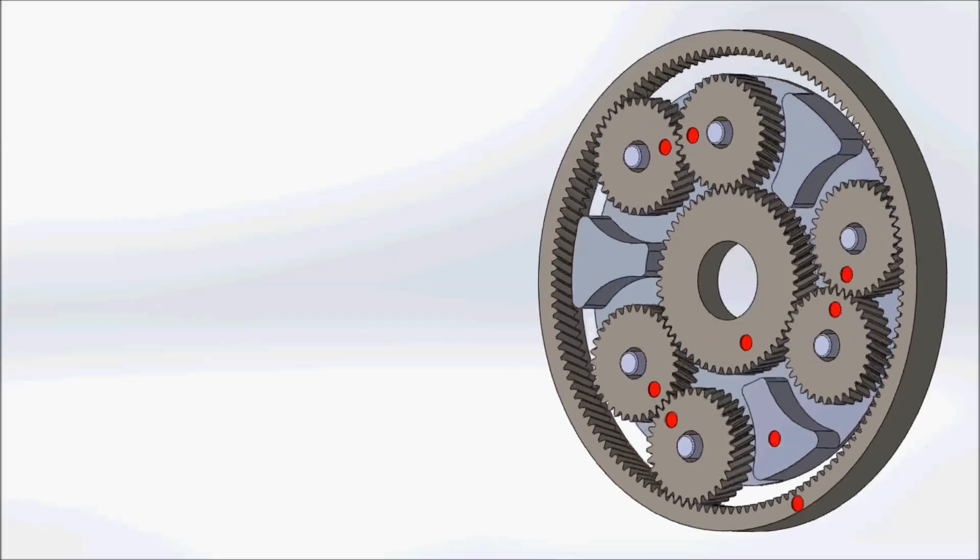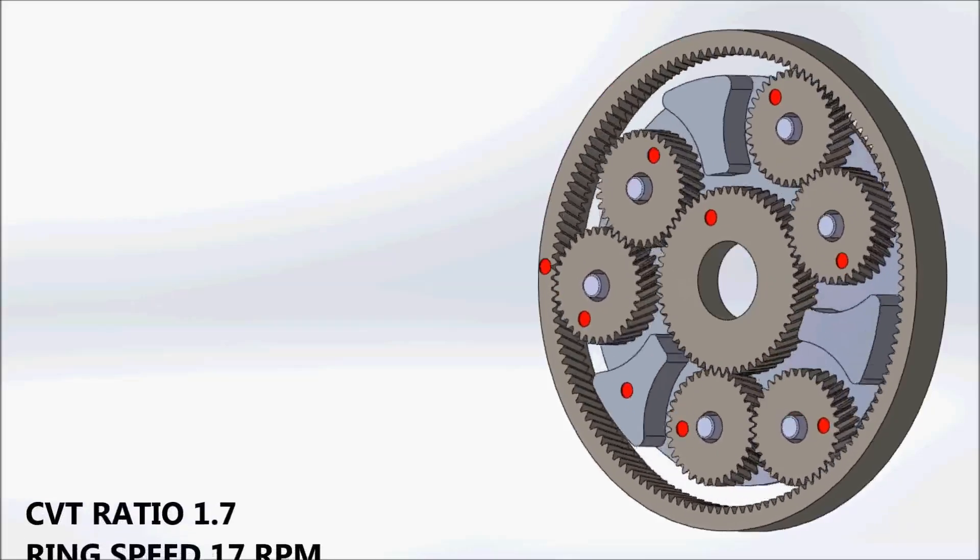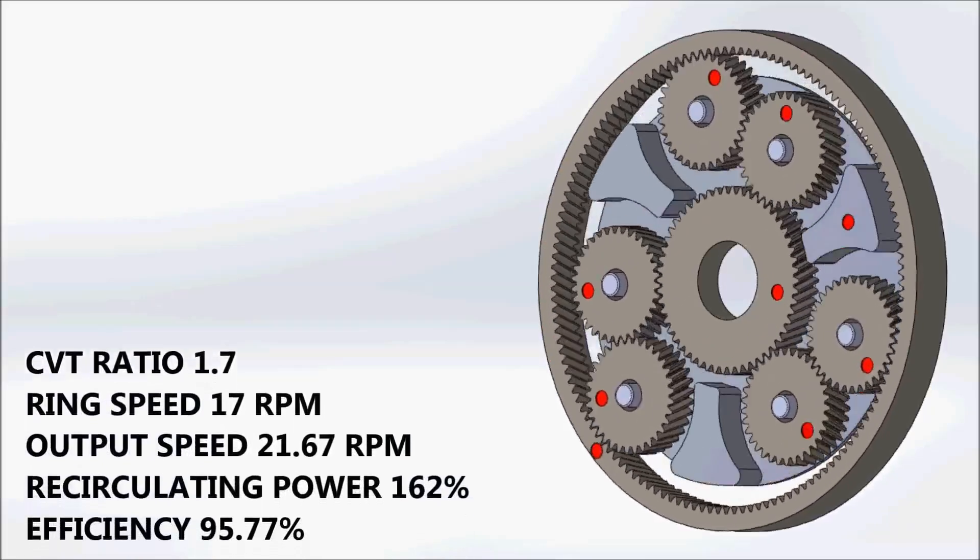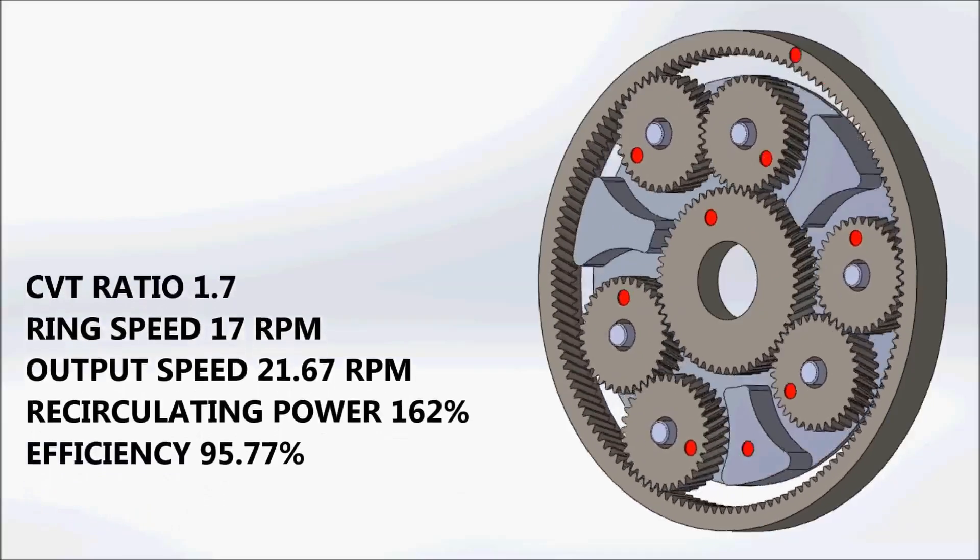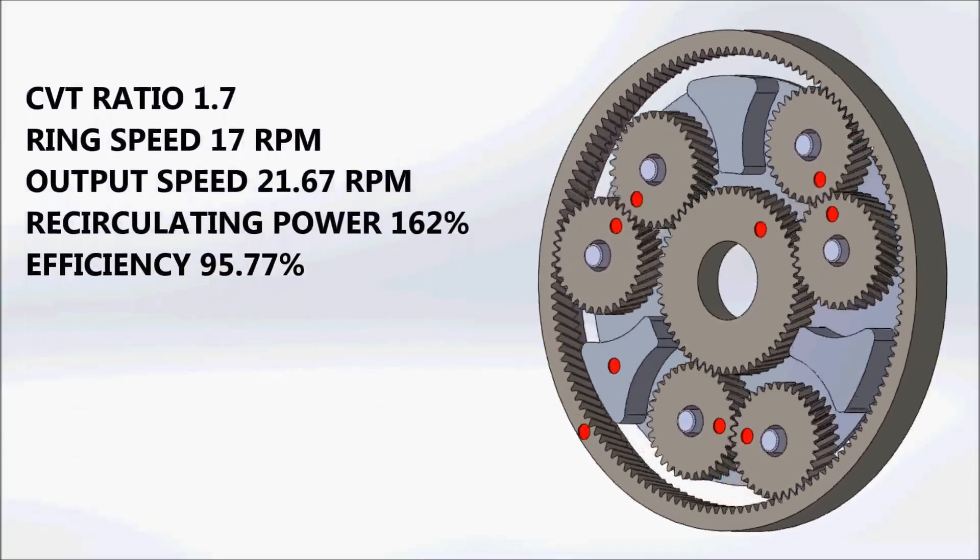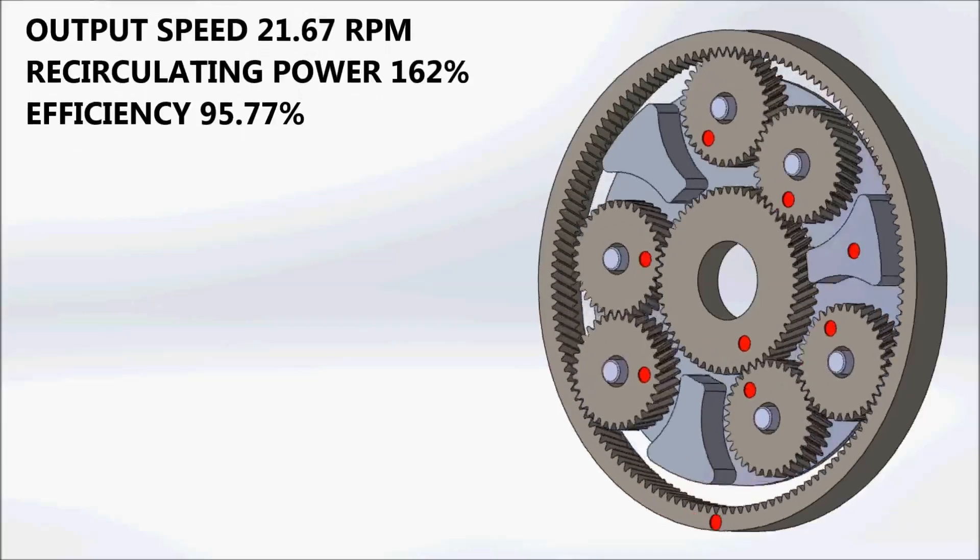As the ratio of the CVT moves towards its high gear position, the speed of the carrier rapidly increases. In this state, the vehicle is moving forward at moderate speed. The recirculating power has reduced, and the overall system efficiency remains relatively high.